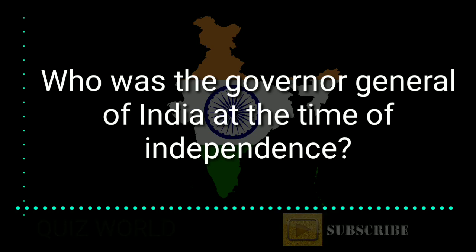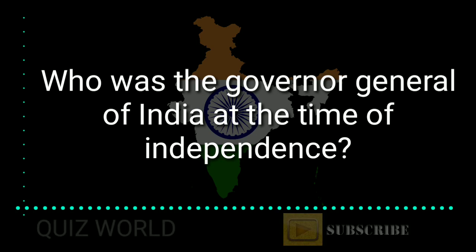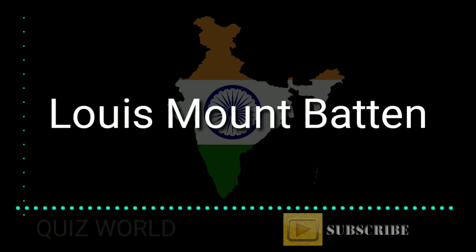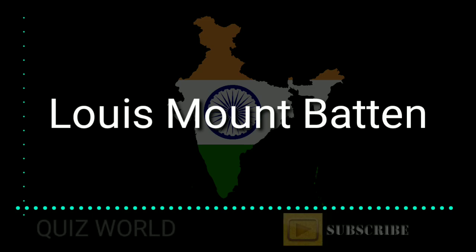Who was the Governor General of India at the time of Independence? Answer is Louis Mountbatten. Louis Mountbatten was the Governor General at the time of Indian Independence.